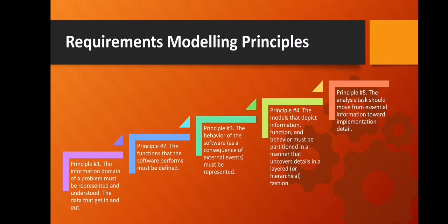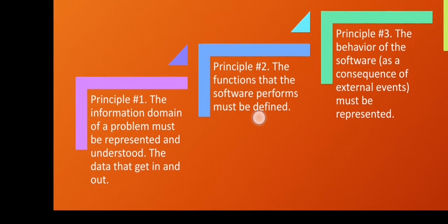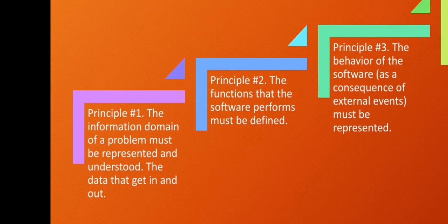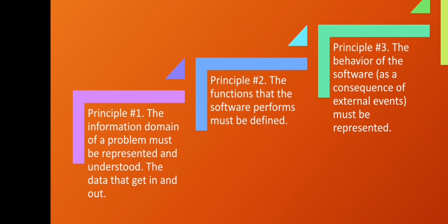Let us discuss the principles of requirements modeling. Principle one: the information domain of a problem must be represented and understood — you should know the data that gets in and out. Principle two: the functions that the software performs must be identified — there should be a clear definition of what the software has to do. Principle three: the behavior of the software as a consequence of external events must be represented.